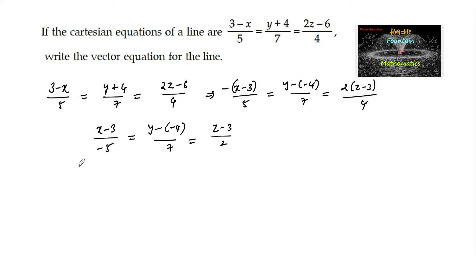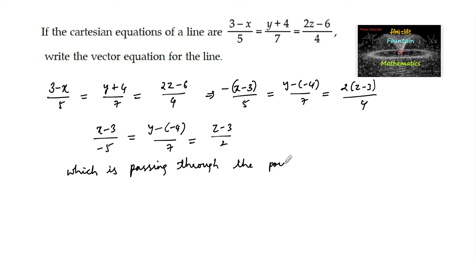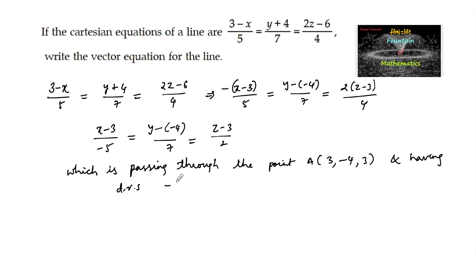So this line equation is passing through the point (3, minus 4, 3) and having the direction ratios, that is the parallel vector, as minus 5, 7, 2.